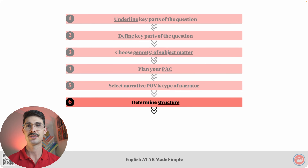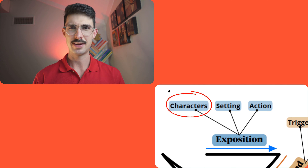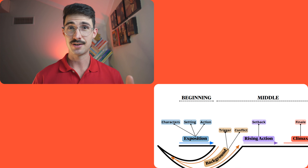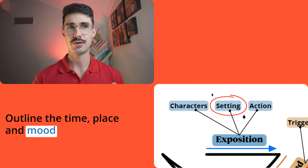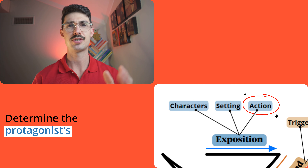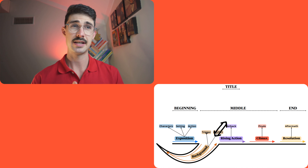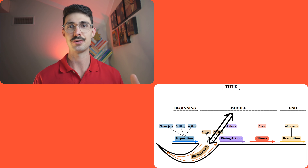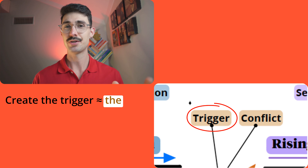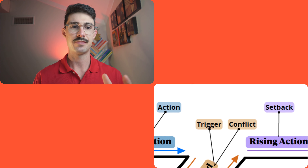Here is step number six: determine structure. The first section is the exposition. Its first element is the characters element — you should utilise conventions of characterisation to determine the key traits of your main characters. The next element is the setting, where you outline the time, place, and mood. The third element is action, where you determine the protagonist's mission. The next section is the background, which is the first section of the middle part of the inverted claw structure. Its first element is the trigger — the event that outlines why the protagonist is in the situation outlined in the exposition.